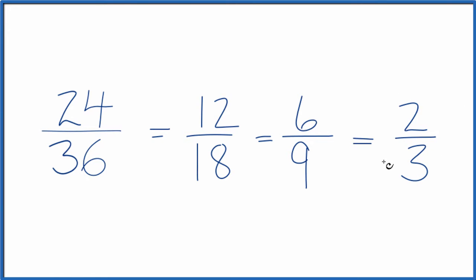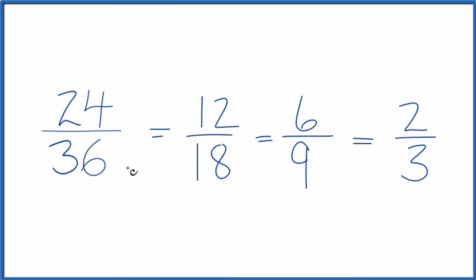So this is as simple as we can go — we've simplified this as far as we can. But these are all equivalent fractions. Divide 2 by 3, 6 by 9, 12 by 18, or 24 by 36, and you'll get the same decimal answer.